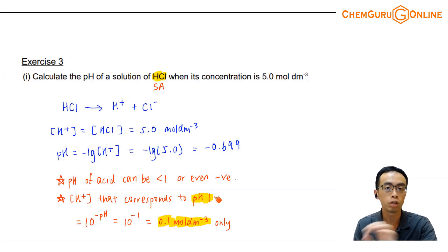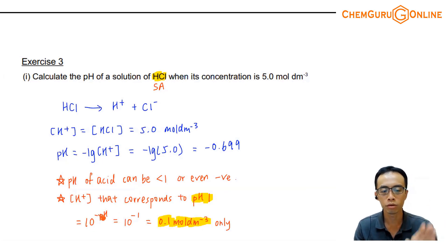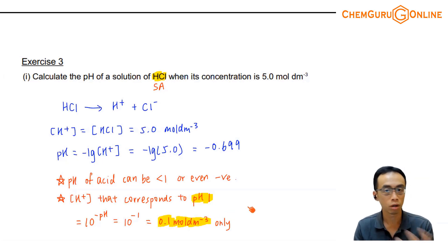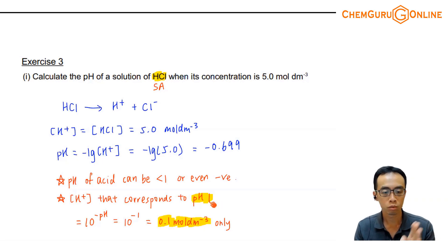What is the corresponding H⁺ concentration that gives a solution of pH 1? The H⁺ concentration will be 10 to the power of minus pH, which is 10 to the power of minus 1 for pH 1. And I can show that this is only 0.1 mol per dm³, which is actually not a big value. I can always easily dissolve a little more acid and increase the concentration to 0.2, 0.5, 0.8, even 1 mol per dm³. Therefore, the pH will be less than 1 — in fact, it can even be a negative value.